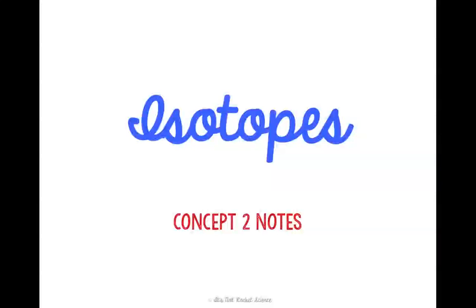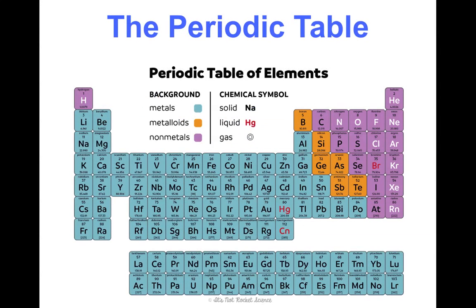On isotopes. So, the periodic table. I want you to start understanding the periodic table. And in order to do that, we need to understand what are all these numbers and symbols for? What does it all mean? So today we're going to break that down. And then from doing that, we'll be able to learn about isotopes, which is what I really want you to get from this concept.